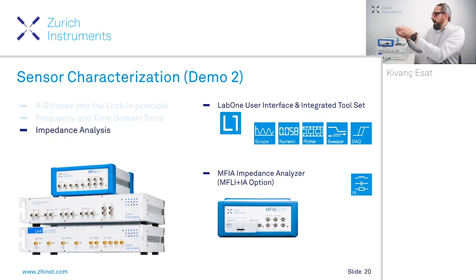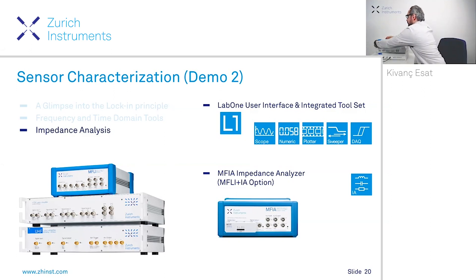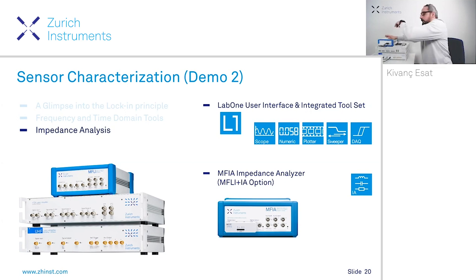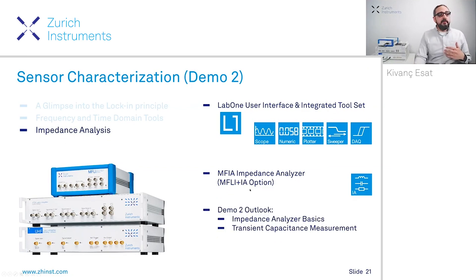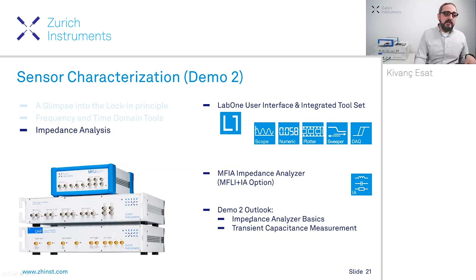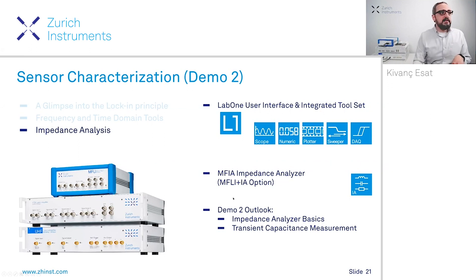I place it here and put it in. For the next part of the demo, I will be looking at impedance analyzer basics from our Laban interface, and then we will do a transient capacitance measurement on this photodiode that I just placed on the instrument.